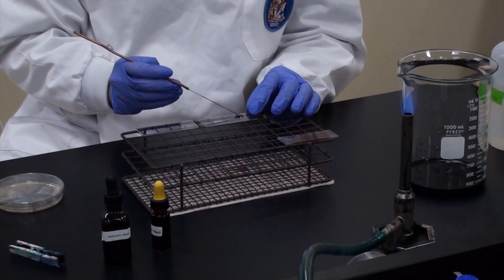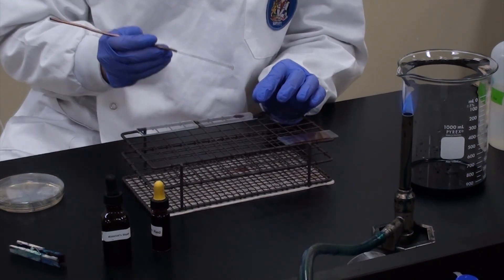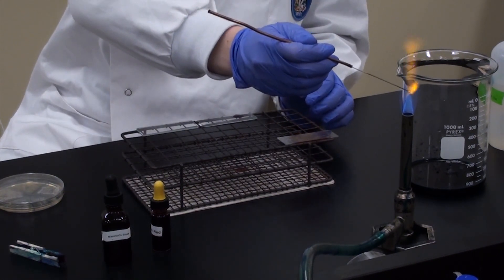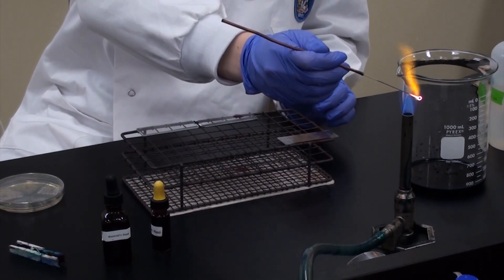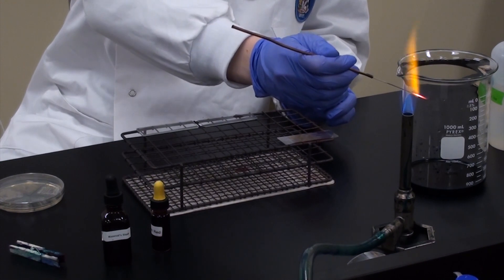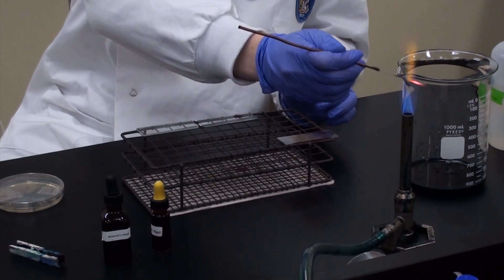You'll then mix it into your negative stain. Flame your loop again, just as we did before. All the way down. Let none survive. So on and so forth.